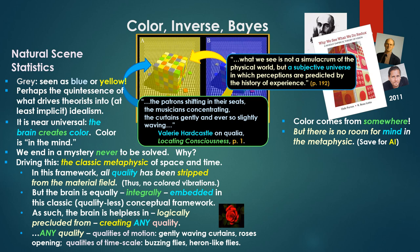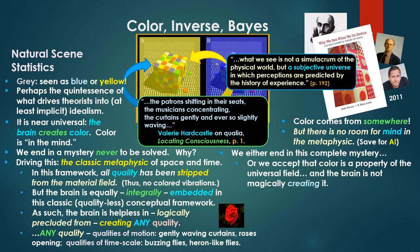But there's no room for mind, for the mental space, for the perceptual space in the classic metaphysic, save totally incongruently and actually inconsistently with AI. You'll have people like Joscha Bach, an AI enthusiast, saying things happen in the mental space, the perceptual space. But there can't be a mental space or a perceptual space in AI, which is the quintessence, the embodiment, the expression logically of the classic metaphysic. So it's not possible. So we either end in this complete mystery, or we accept that color is a property of the universal field, that the brain is not magically creating it.